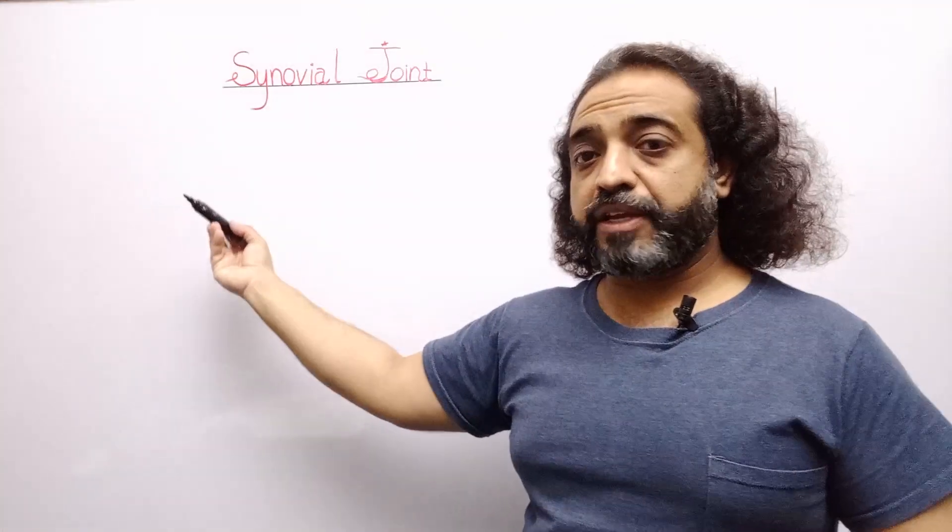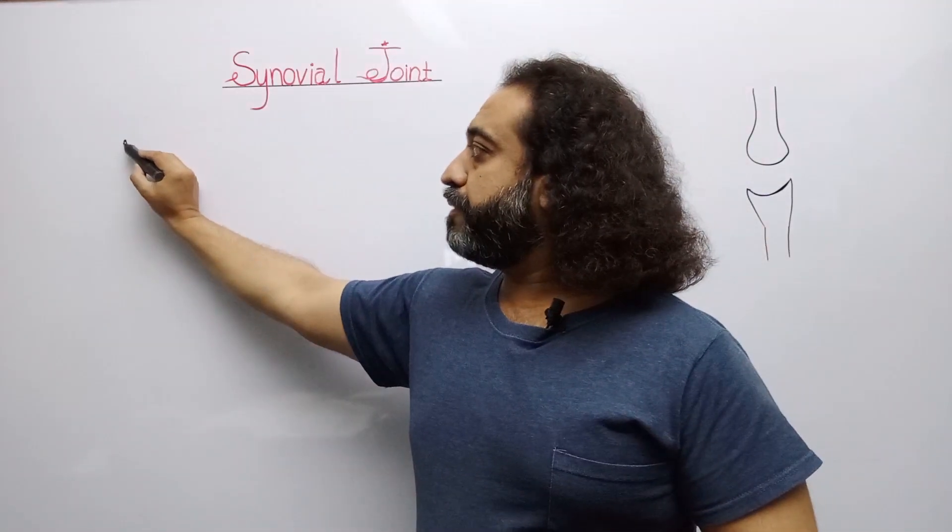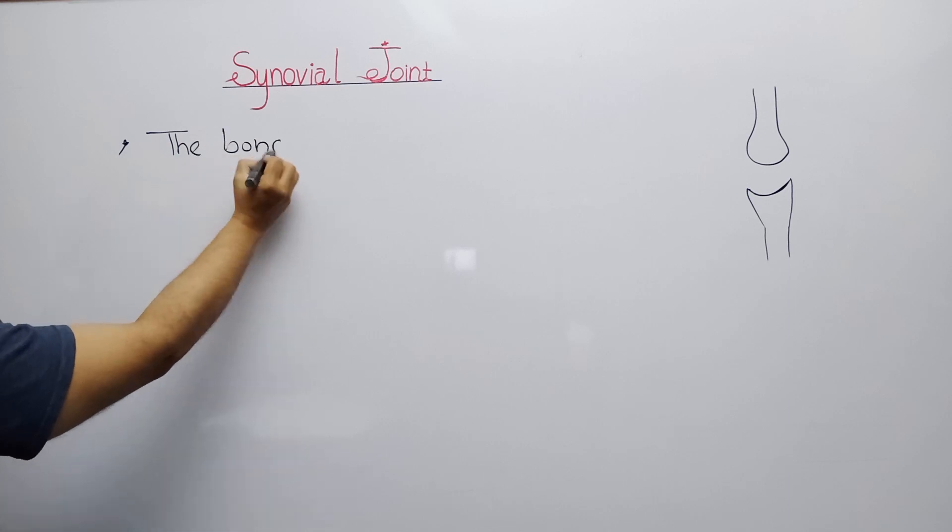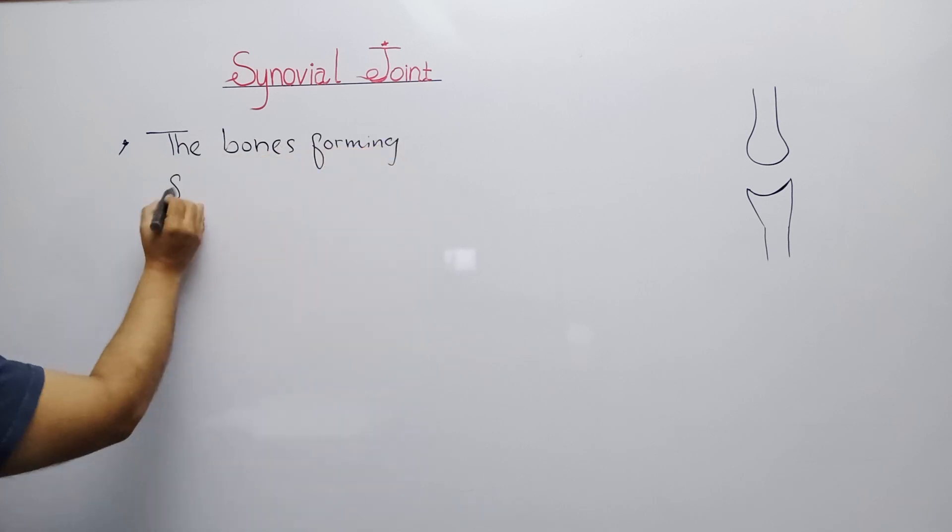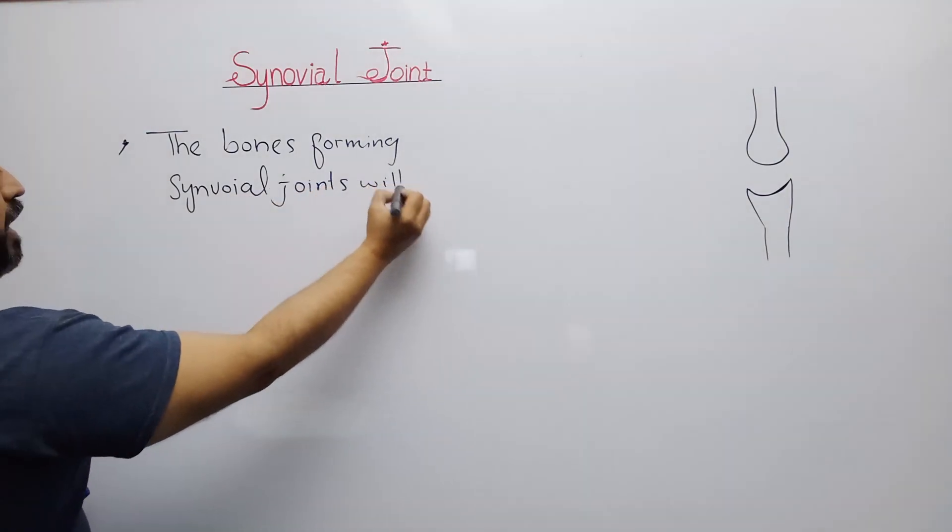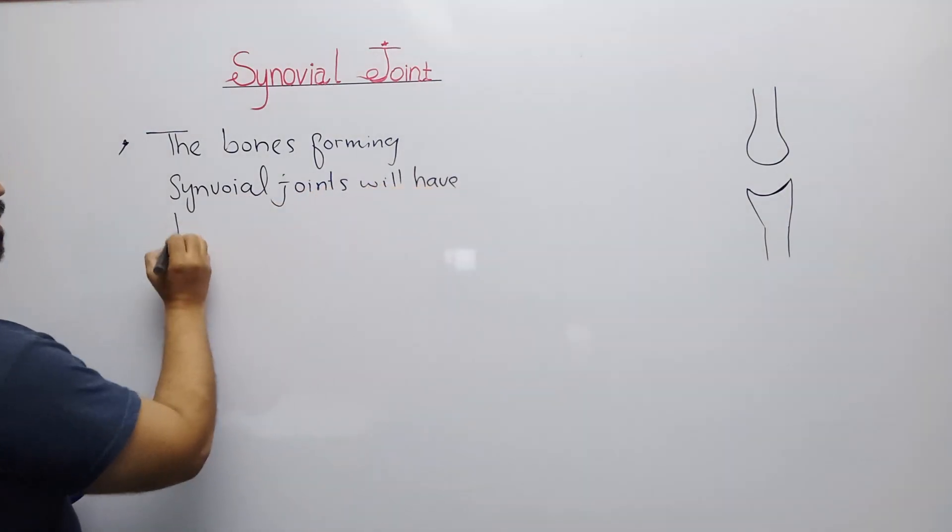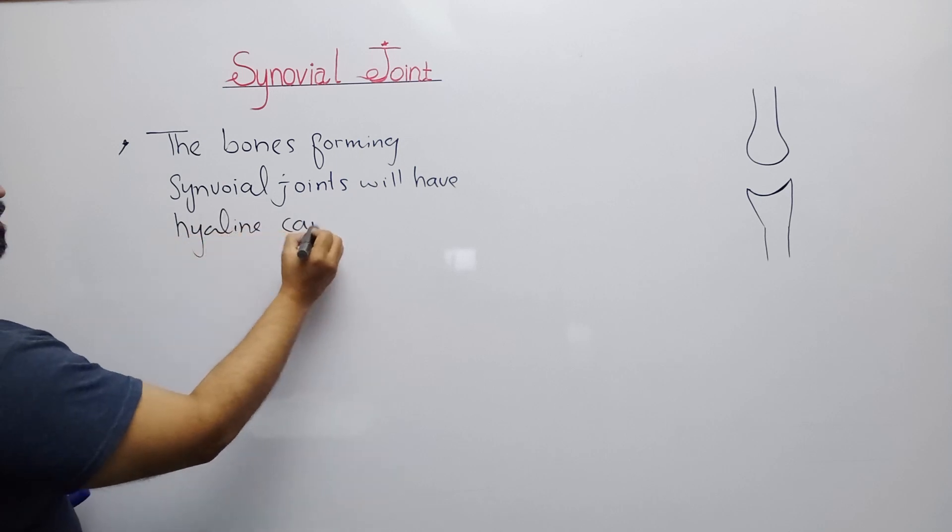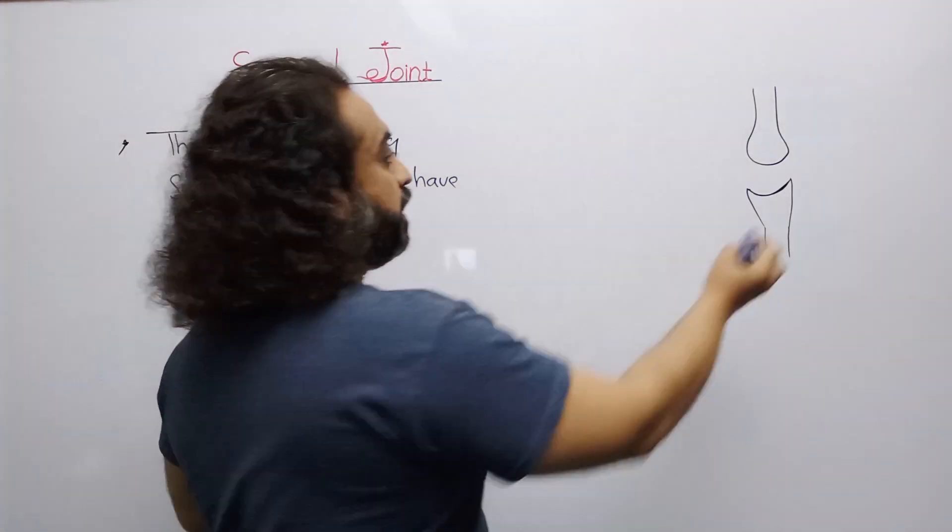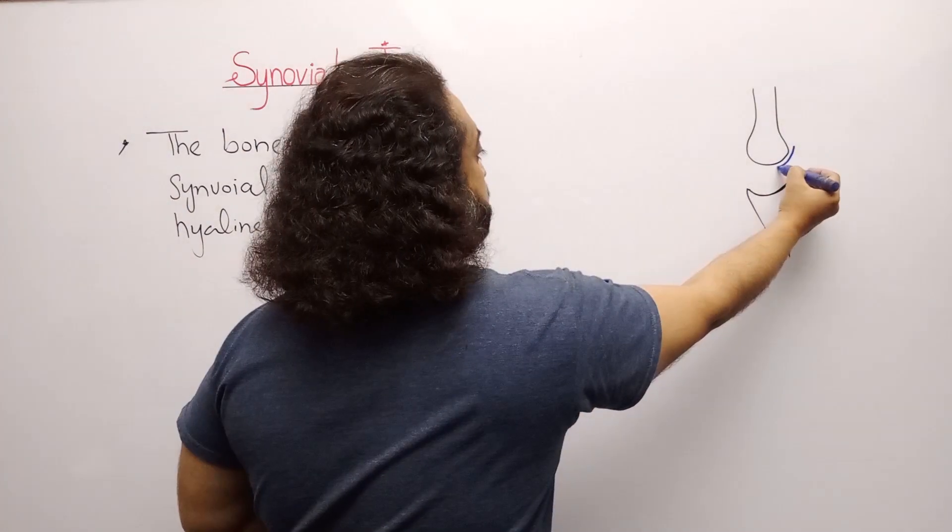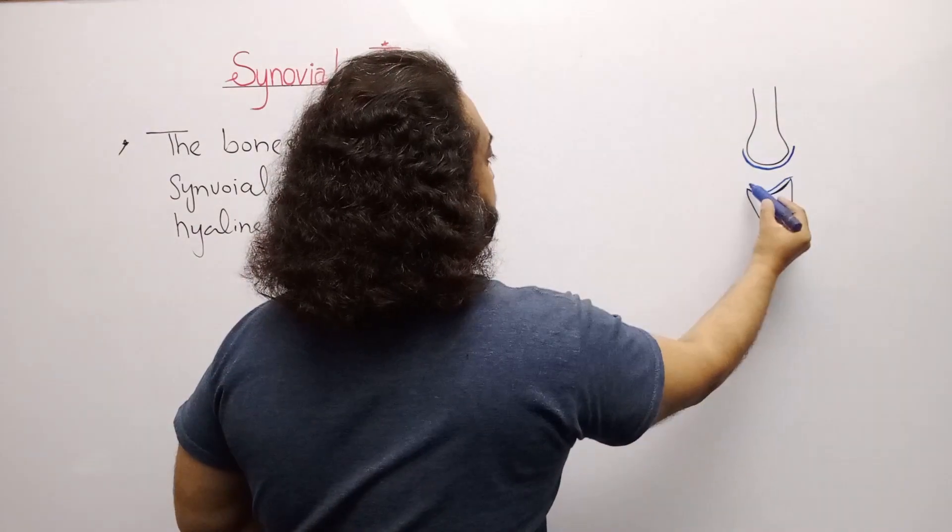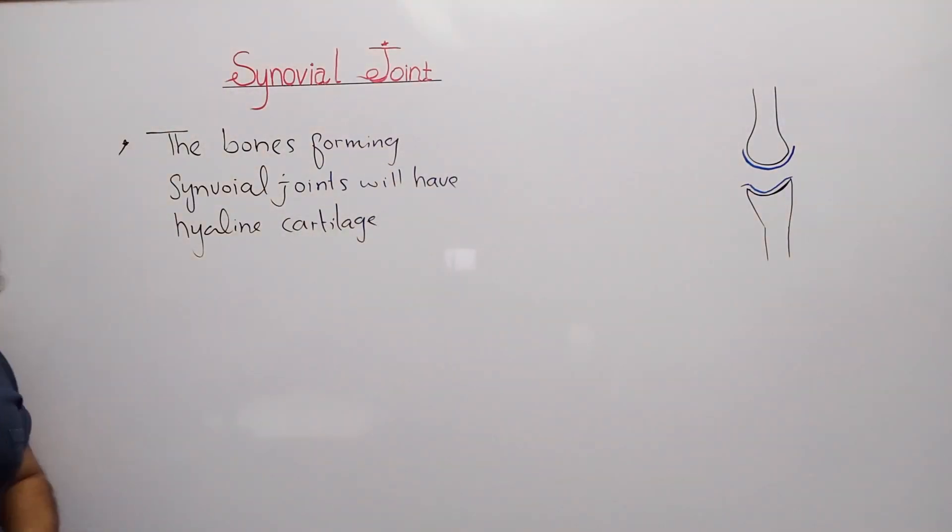To have a synovial joint, the bones forming synovial joints will have hyaline cartilage. It is point one. Look here, here is our bone, and at this bone, at both proximities, there is present hyaline cartilage.